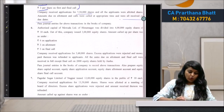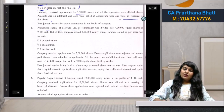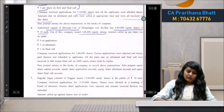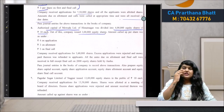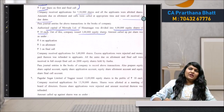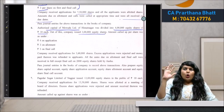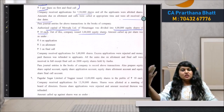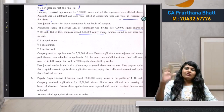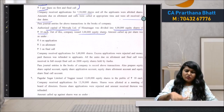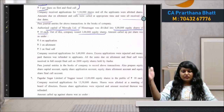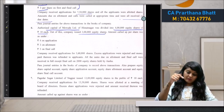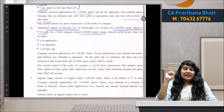Question number 6: Authorized capital of Mewada Limited, Himmat Nagar was divided into 4 lakh equity shares of ₹10 each. Out of this, the company issued 3 lakh equity shares. Authorized capital means the share capital that a company can issue during the lifetime of the company. We don't need to do anything with the authorized capital figure — it's just background information.